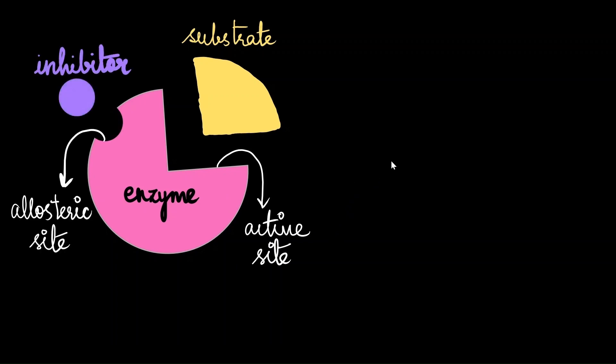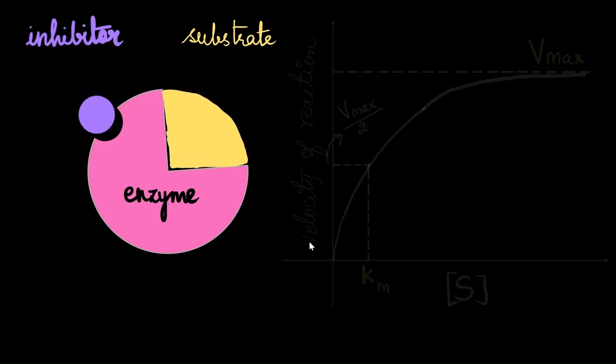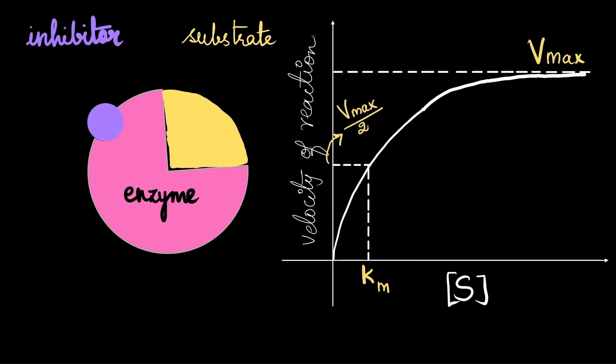In non-competitive inhibition, we have an enzyme with the substrate which can bind to its active site. But in addition to the active site, there is a new site called as the allosteric site. And inhibitors usually bind in the allosteric site. Substrate bind to active site, inhibitor binds to the allosteric site.